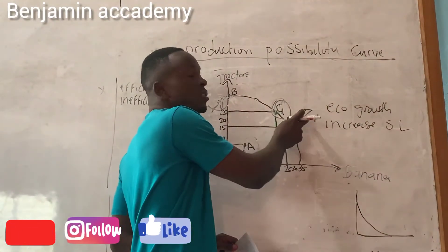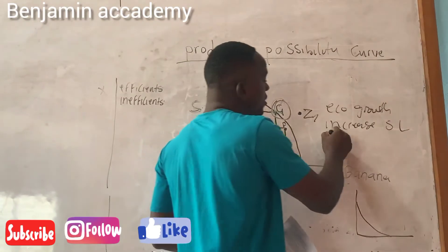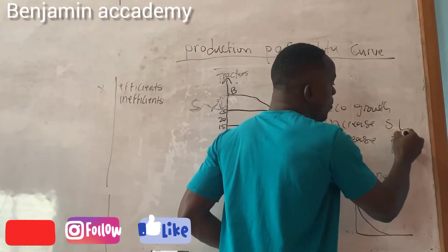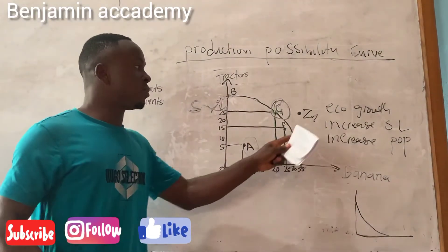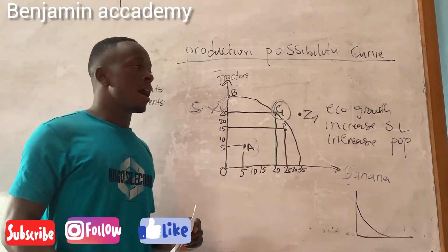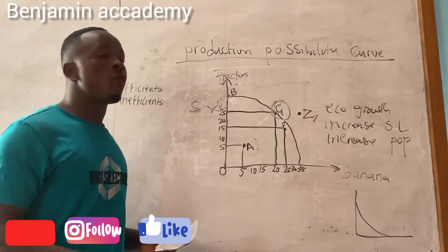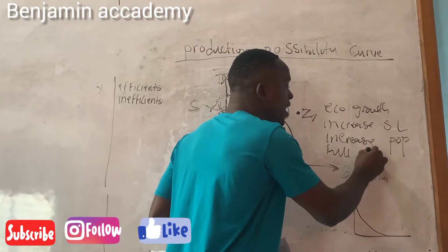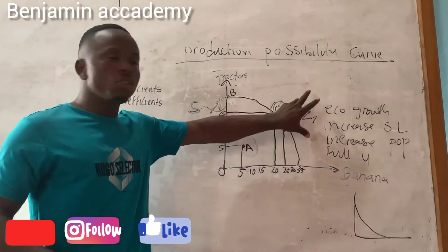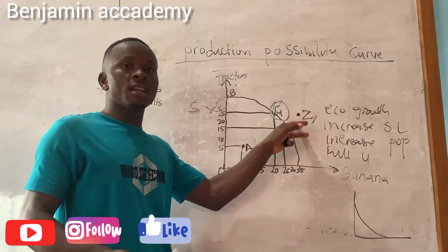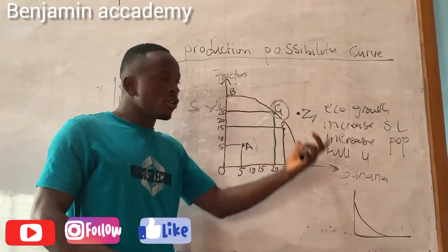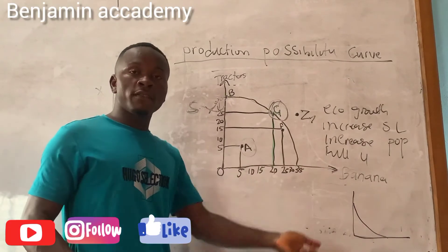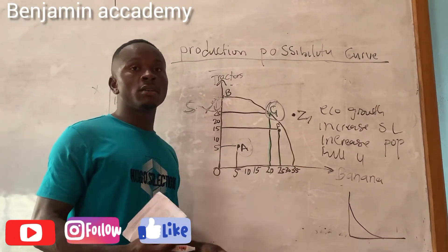There is also an increase in population size. Resources are fully utilized. So those are the conditions for which a country is producing at point Z: economic growth, increase in living standard, increase in population size, and full utilization of economic resources.